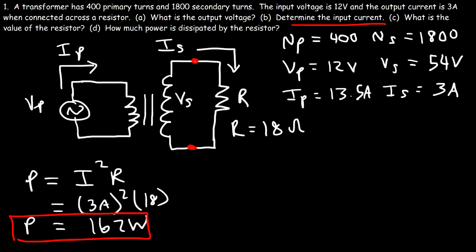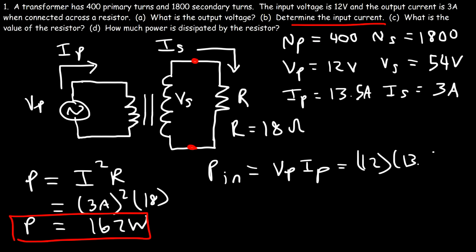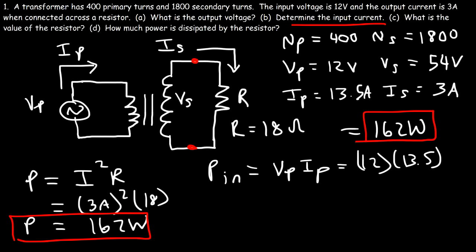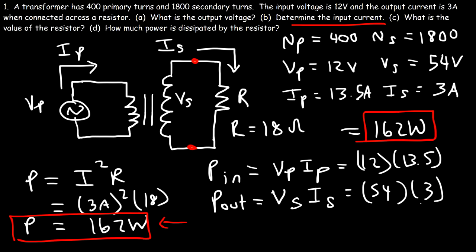The input power in the primary coil is VP times IP: 12 volts times 13.5 amps equals 162 watts. The power delivered by the secondary coil is VS times IS: 54 volts times 3 amps also equals 162 watts. So the power absorbed by the primary coil equals the power dissipated by the resistor, confirming energy conservation.